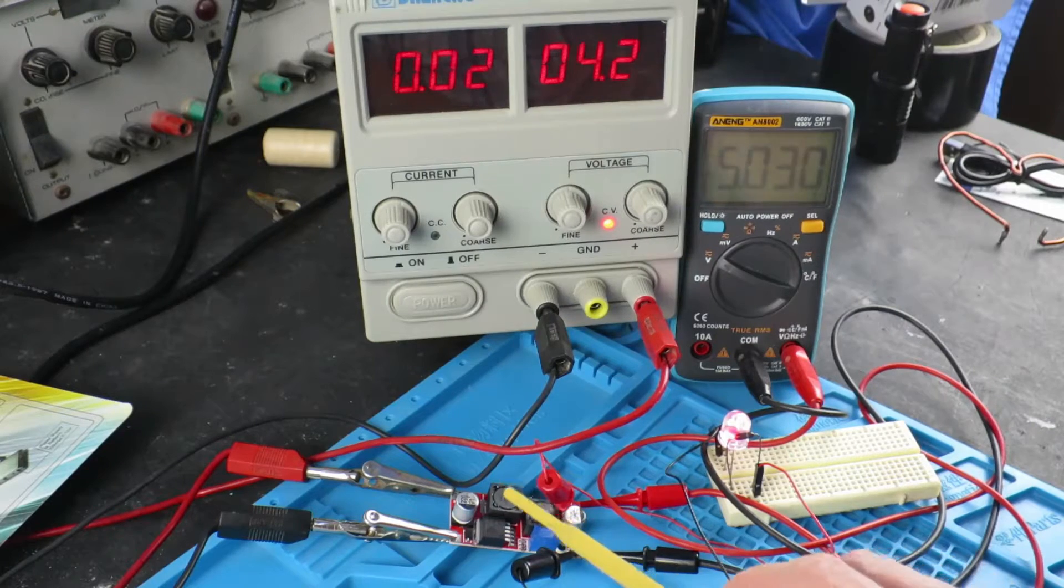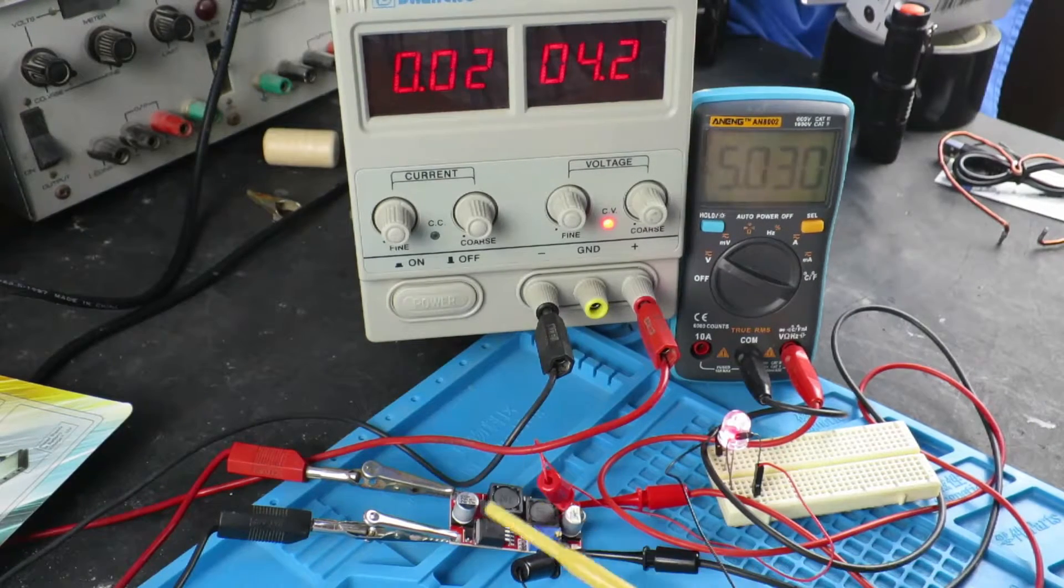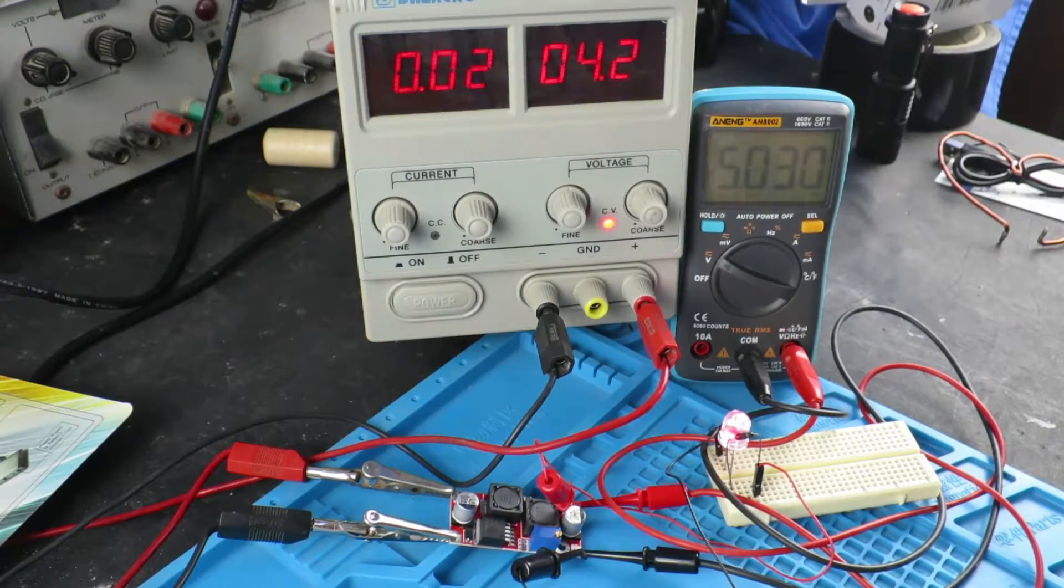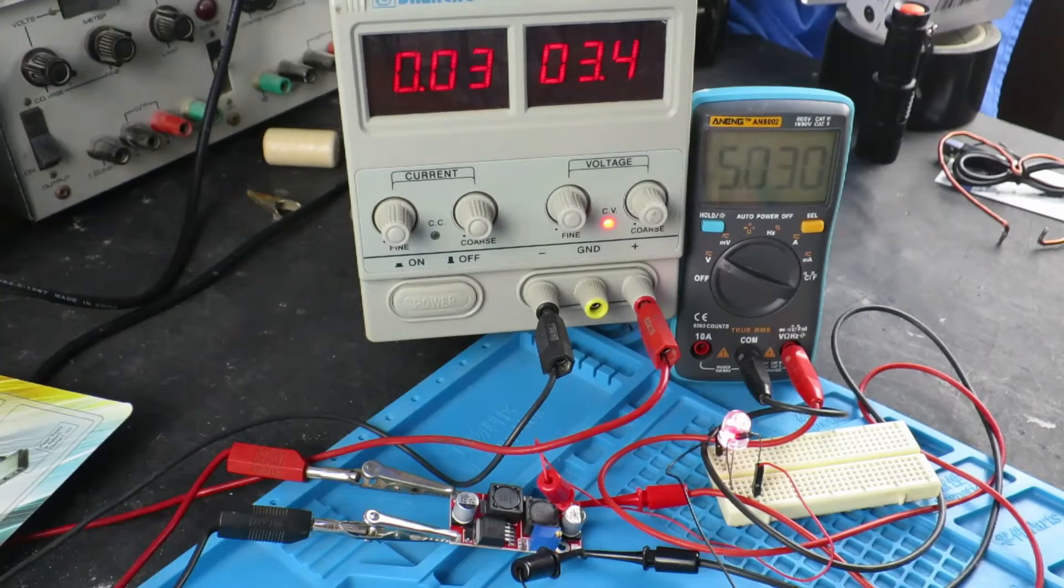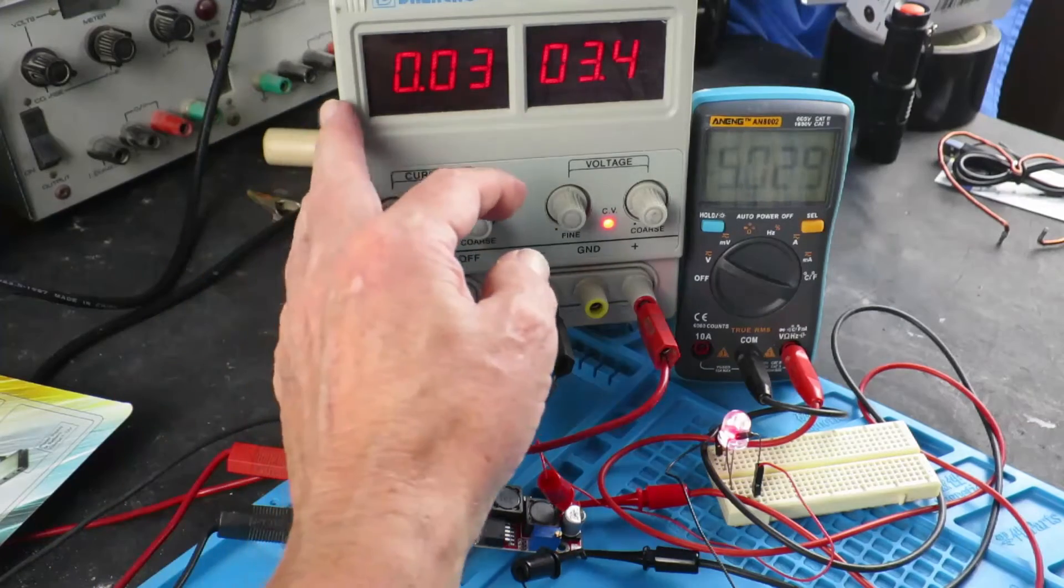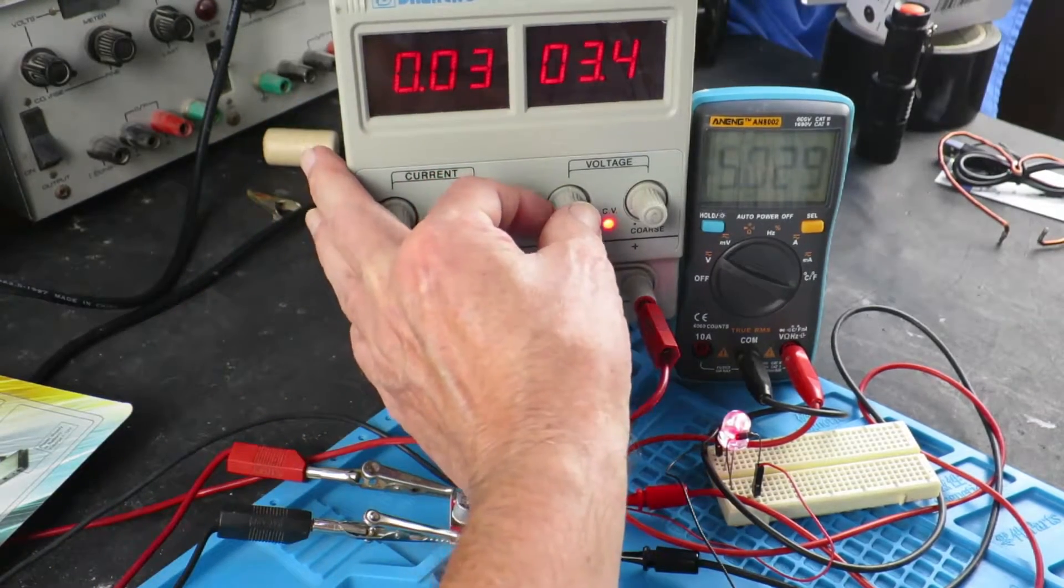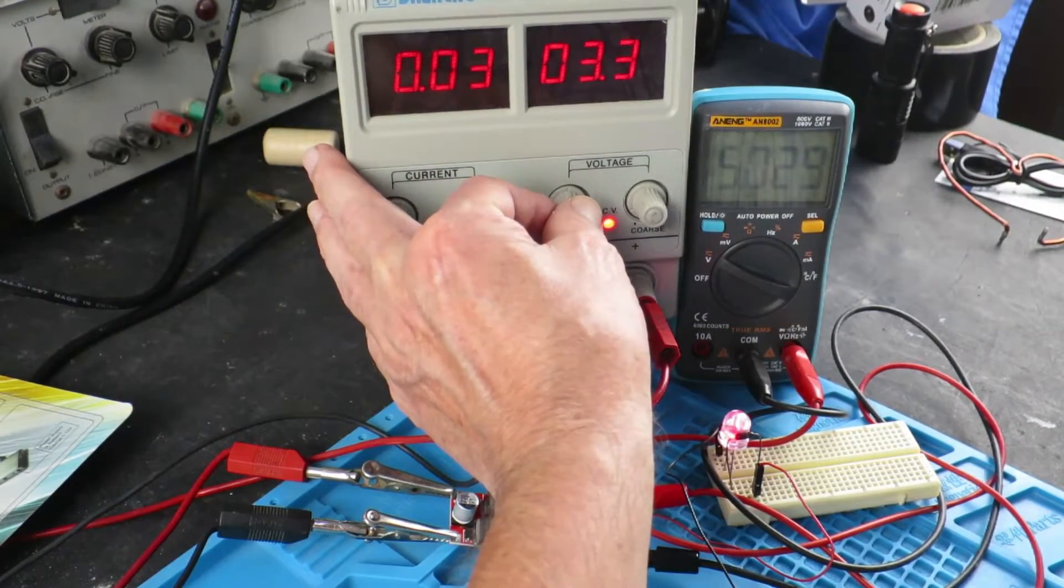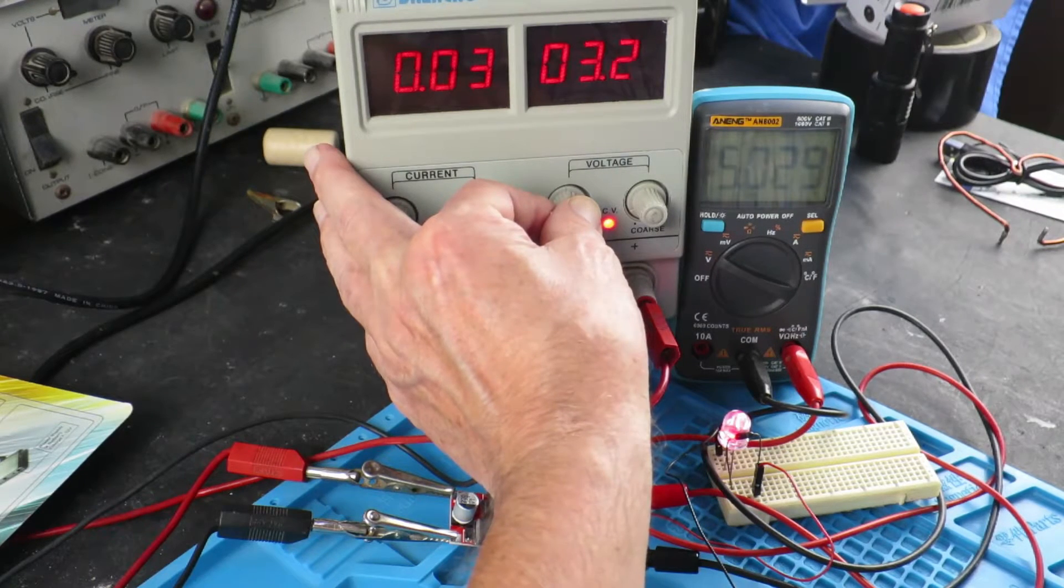By the way the LM2587 is rated from 3 volts up to 35 volts. So this was the danger point before where suddenly the output voltage shot up. Let's go down a bit further. 3.3 no problem.